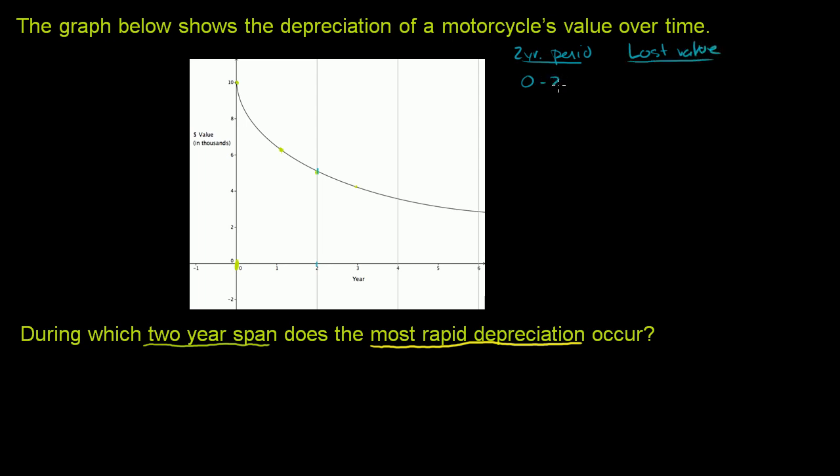So from zero to two years, we went from $10,000 to what looks like about $5,000. That looks right about $5,000. So we lost $5,000 of lost value. Then if we go from one to three years, what happened?